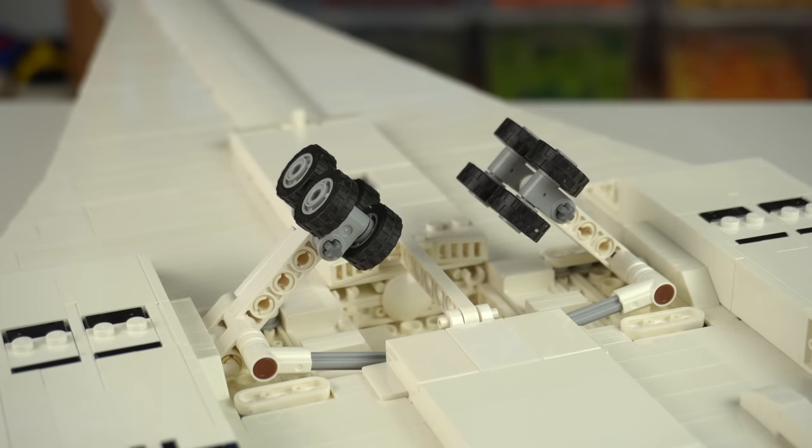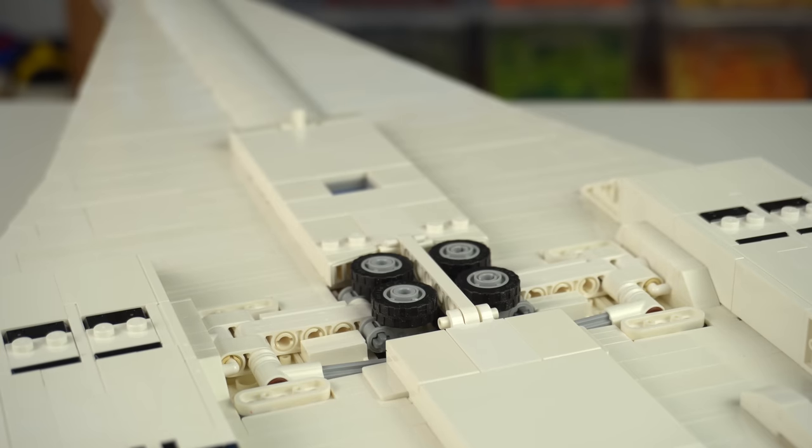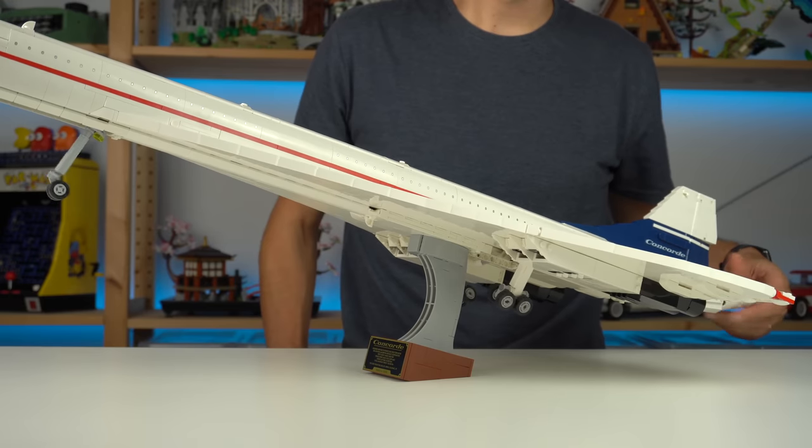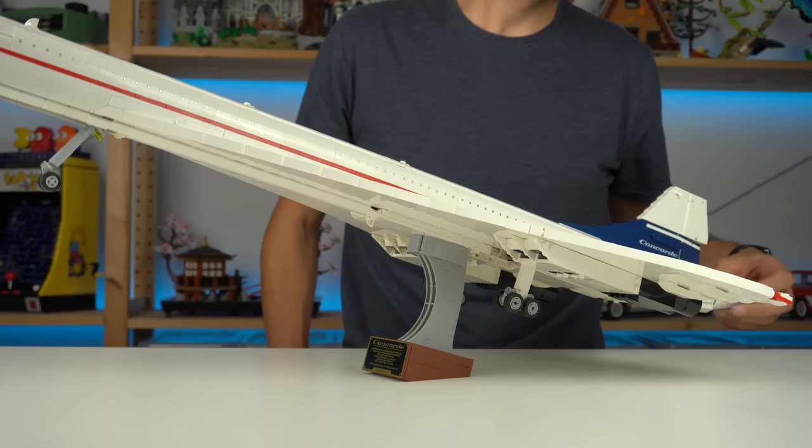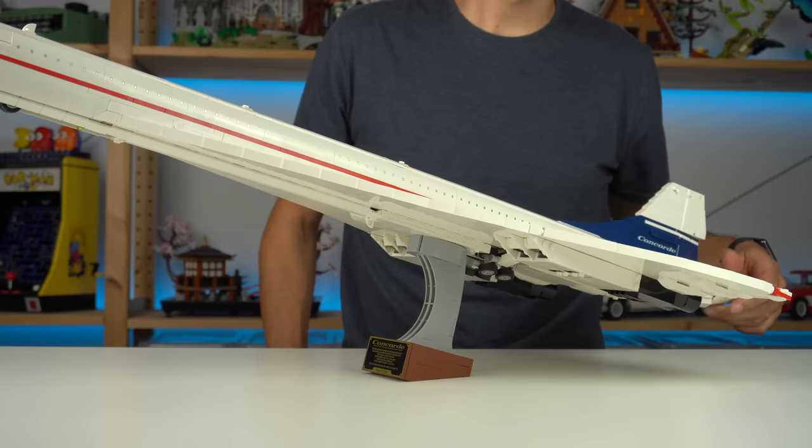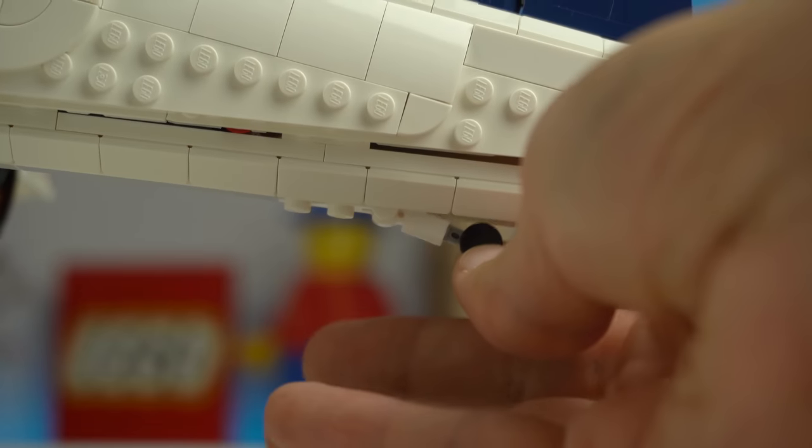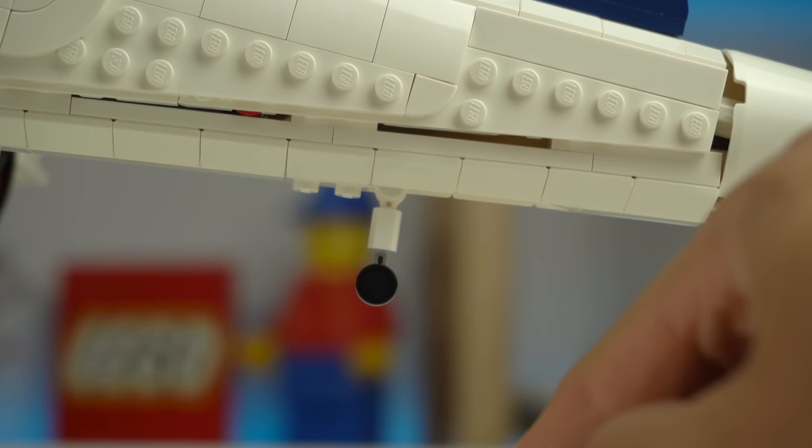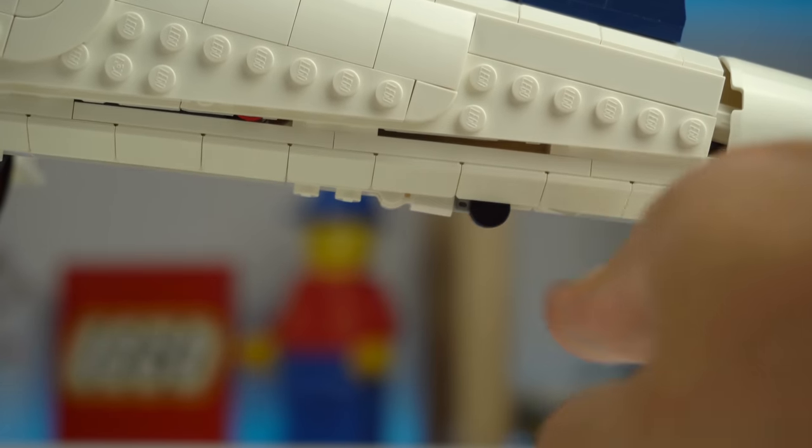Not only that, seeing it retract flawlessly back into their spots is super satisfying to look at. Definitely the most impressive play feature of the whole model but not the last one. The tail section also has a bumper wheel that made it so that the plane wouldn't hit the floor during takeoff.